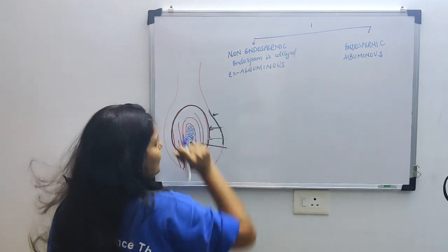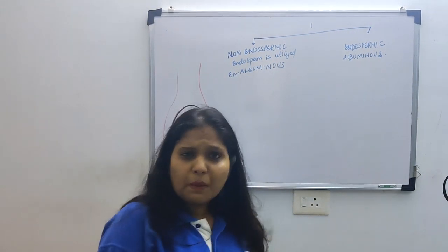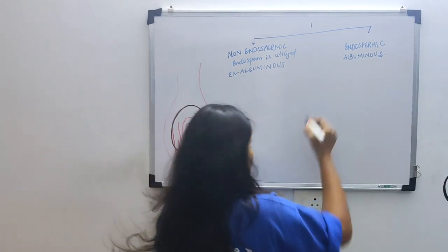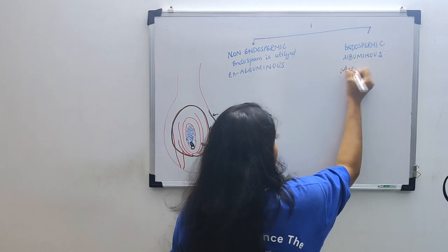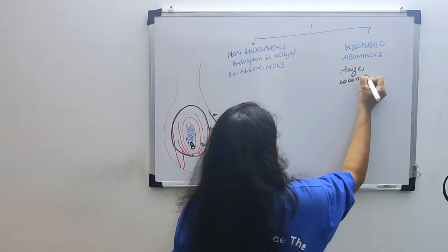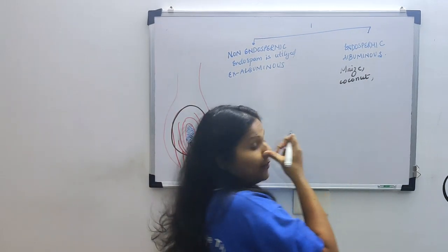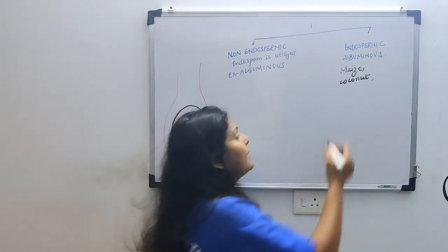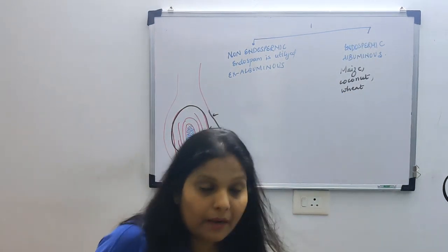Endospermic has another name: albuminous. Albuminous seed. If endospermic is albuminous, then non-endospermic we will call ex-albuminous. In which seeds does endosperm remain? We just saw - in maize, endosperm remains. In coconut, endosperm remains. Rather, all monocots or grasses - like wheat, like rice. In these, endosperm will remain.